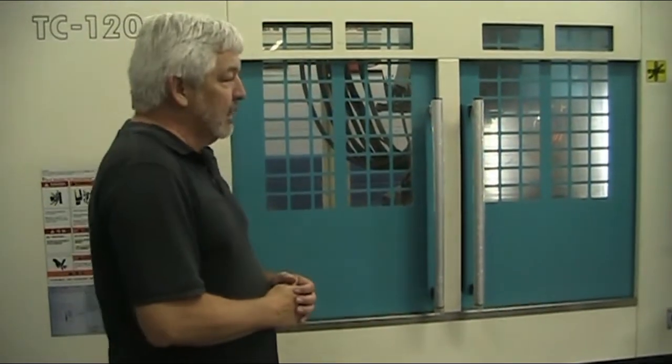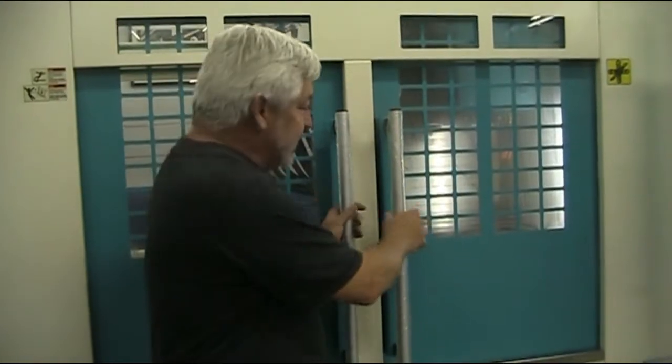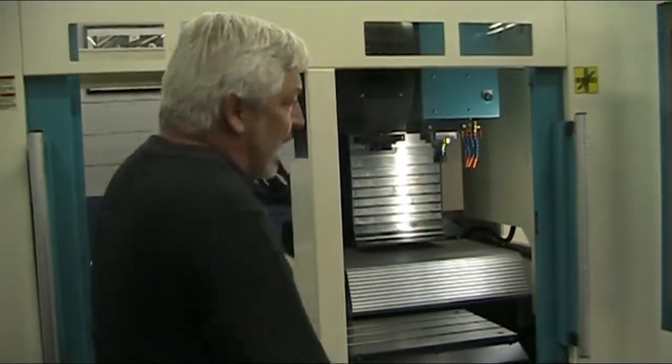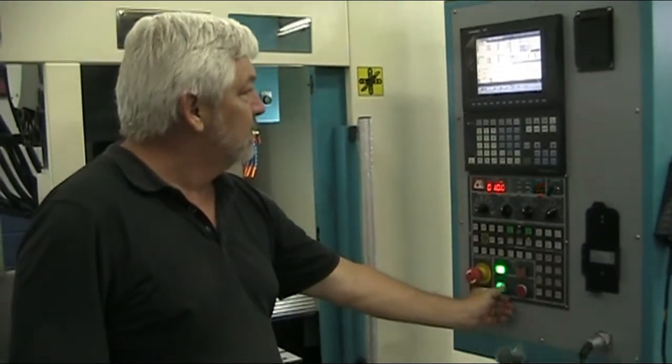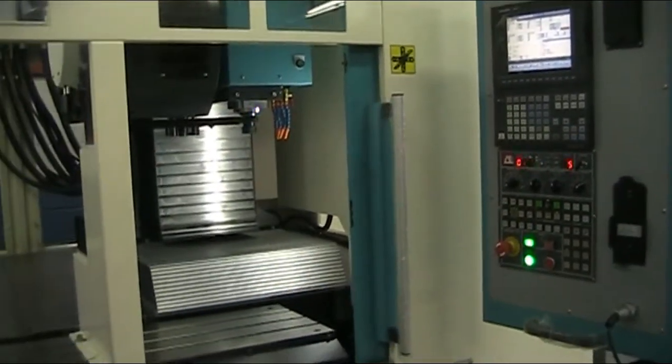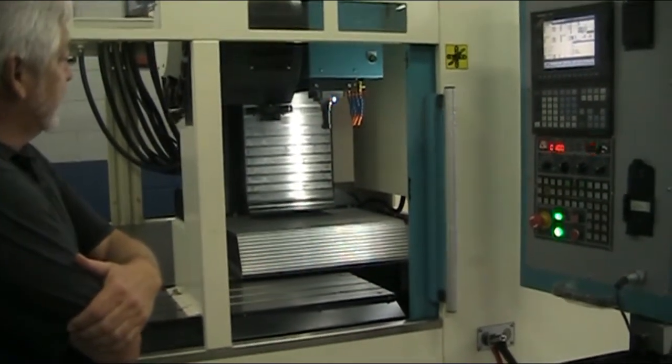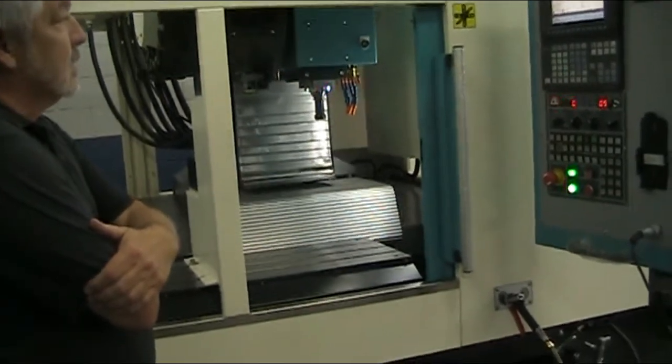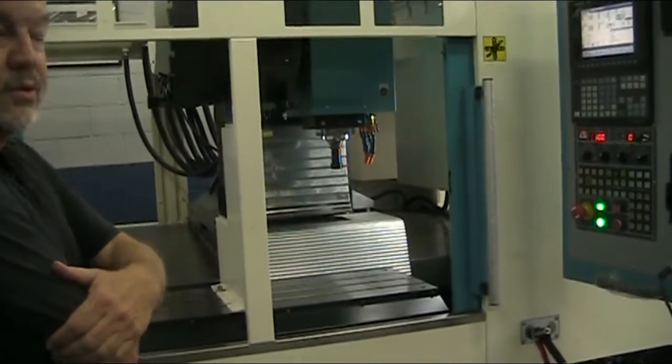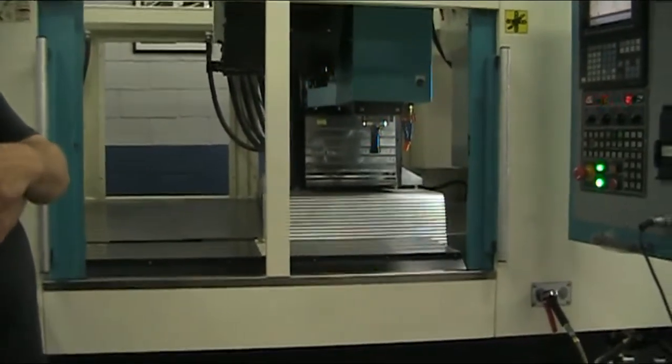So the spindle is always making chips. Right now, I'll open the door so you can see what's going on inside. And we will start to cycle. First cycle is going to illustrate a rigid tap cycle.